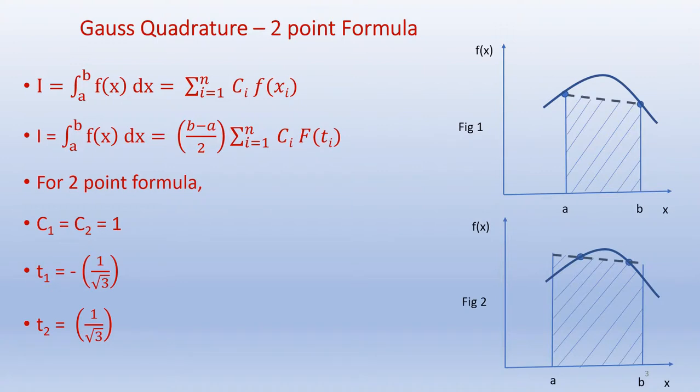The Gauss Quadrature two-point formula strategy is as follows. If you look at figure one, we want to integrate the function f(x) between the limits a and b. The f(x) is represented by a curve. When you use the trapezoidal method, for example, we approximate the curve between these two points using a straight line as shown. The area under the curve is represented by the hash under the straight line.